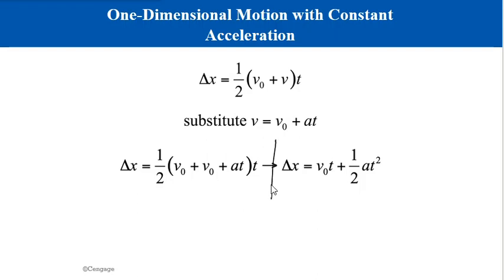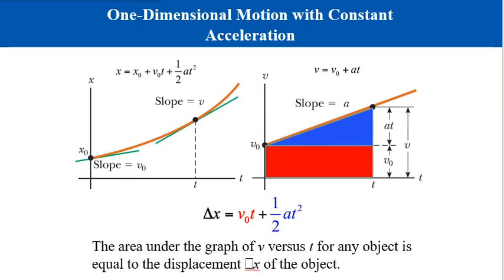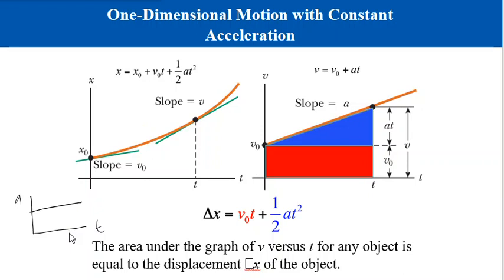This is another way of deriving the same equation from the previous video. There are many ways to derive the kinematic equations for acceleration. Looking at the graphs: when an object accelerates, the position versus time graph curves upward; the velocity versus time graph is a straight line; and the acceleration versus time graph is a horizontal straight line. These three plots of position, velocity, and acceleration as functions of time are all related.